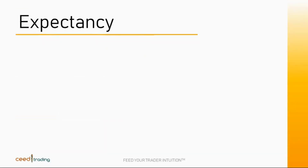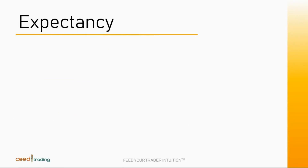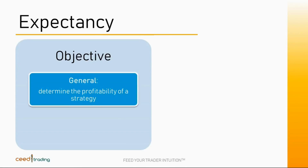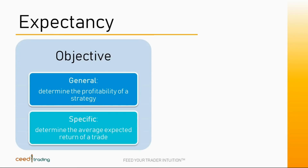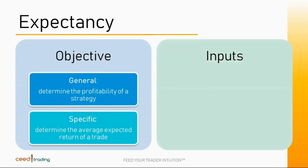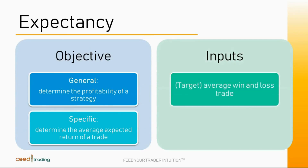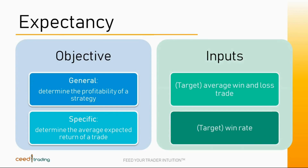The first question we need to answer is how to measure the overall viability of a strategy. If we have a sufficiently large number of trades, we can calculate the expectancy ratio, which indicates the profitability of a strategy and the expected average return of the next trade. A positive number after subtracting transaction costs indicates that the strategy is profitable. The required inputs for these calculations are the average win and average loss trade and the target win rate. Target in this context refers to a pre-trade estimate if we don't have any historical trade data.